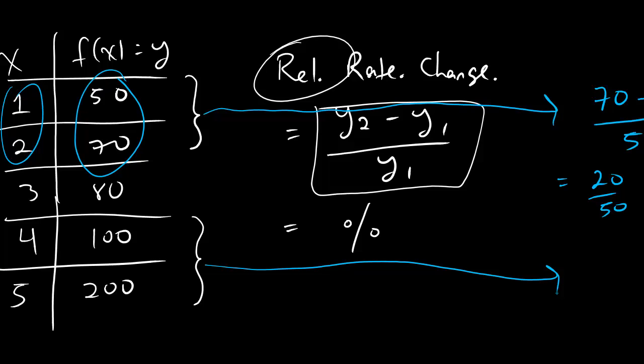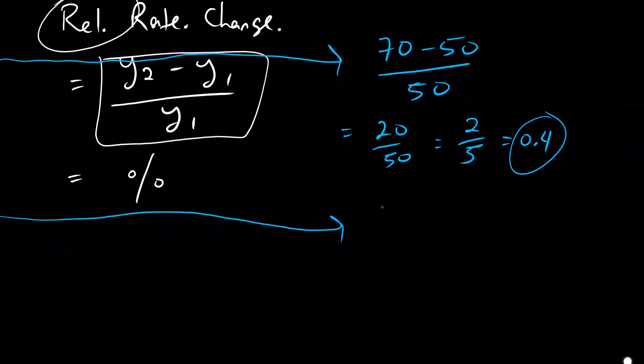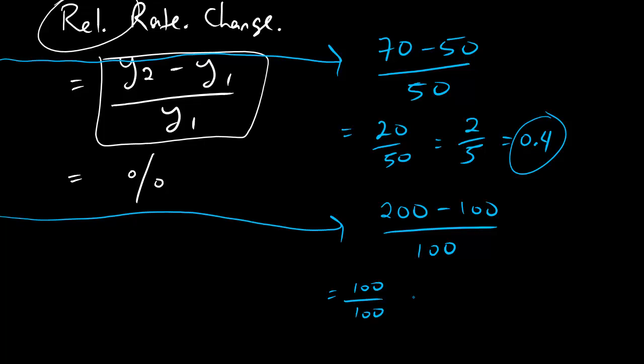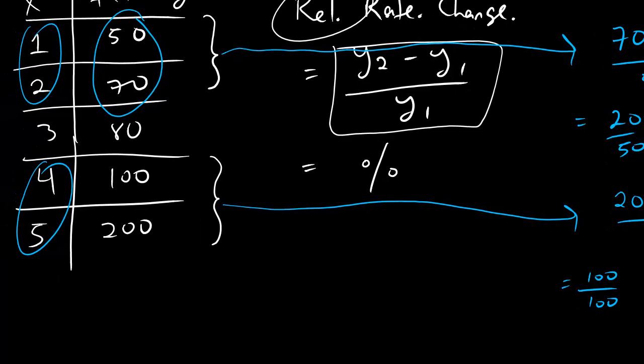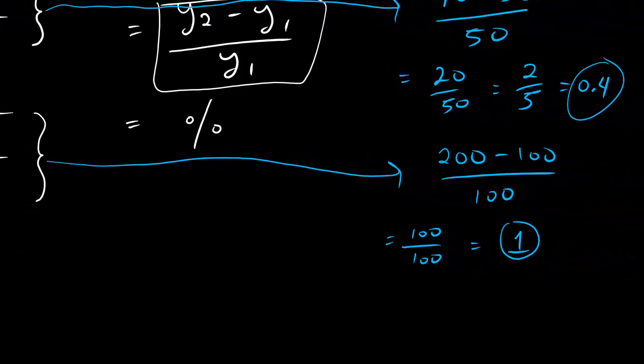Now, we're going to go between x equals 4 and x equals 5. So, we've got these two y values, 200 and 100. Plug them into the same formula. It's y2 minus y1 all over y1. And that's 100 over 100, which simplifies to exactly 1. And so, here's what this is saying. My relative rate of change from 1 to 2 was 0.4, and that means that I went faster by 40%. But between 4 and 5, I went faster by a factor of 1, which is 100%. So, in the first place, I went 40% faster. In the second place, I went 100% faster.